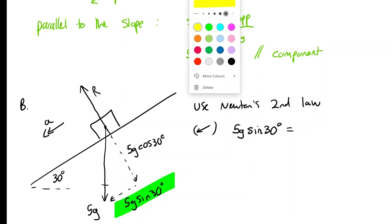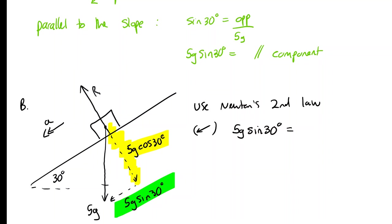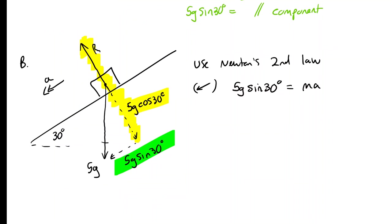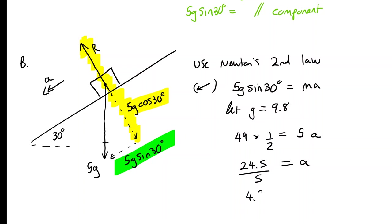The component 5g cos 30° acts perpendicular to the slope, and the reaction force R is also perpendicular, so neither contributes to motion along the slope. Since 5g sin 30° is the only component acting along the slope, it is the resultant force, and by Newton's second law equals ma. Letting g = 9.8: 49 × sin 30° = 49 × 0.5 = 24.5 = 5a, so the acceleration is 4.9 metres per second squared.